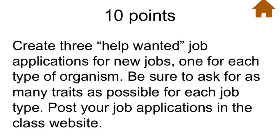Aside from meeting the point requirement, students are free to choose. For example, a student who is not yet confident would choose the 10-point project: create three help-wanted job applications for new jobs, one for each type of organism. A wanted producer, for instance, where students enumerate the descriptions of a producer. If the student accomplishes this, they earn 10 points. If not, the student can always choose another project to make up for it.